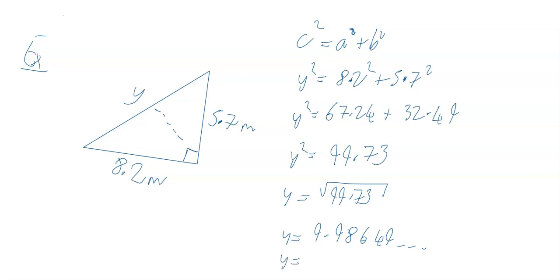Give your answer to a certain degree of accuracy. I'm going to go to two decimal places. My third decimal place is my check figure - it's a 6, which means my second decimal place rounds up. So 9.99 meters, done to two decimal places.